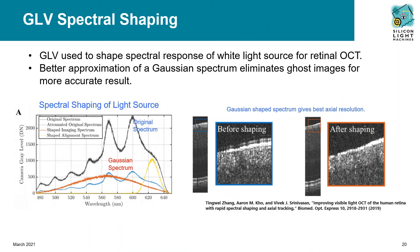Researchers at UC Davis have applied the GLV to improve the resolution of a new OCT system. This is done by using the GLV to shape the spectrum of a supercontinuum light source. The light from the broadband laser is separated into its different wavelengths and projected onto the GLV. The GLV can then attenuate the individual wavelengths to transform the original spectrum into a Gaussian spectrum. A Gaussian-shaped spectrum provides the best axial resolution. The GLV may also be used as a diffractive neutral density filter and optical low-pass filter. The effectiveness of this GLV-enabled spectral shaping is shown in the retinal images on the right.